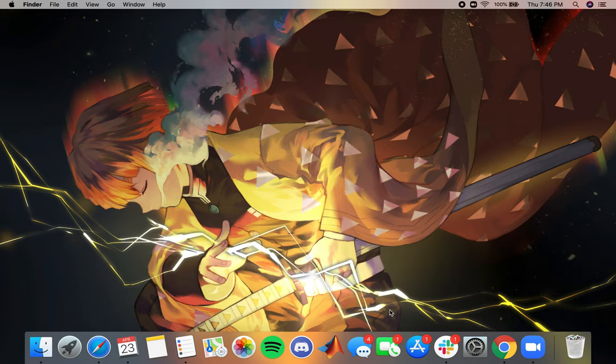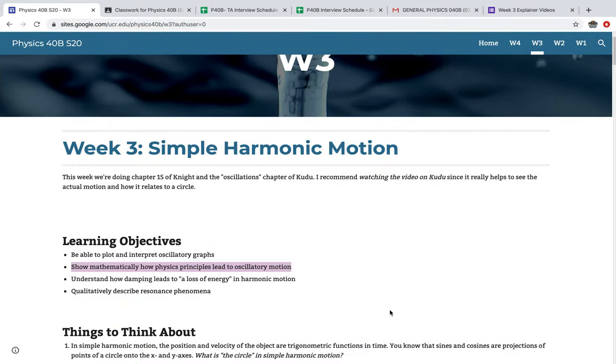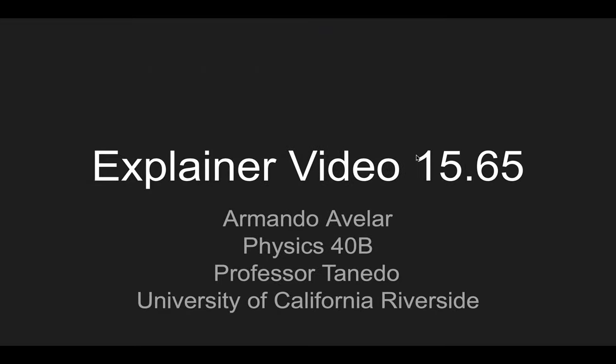Alright, welcome back Physics 40B for Dr. Tenedo's class. My name is Armando Avalor and we're gonna be doing another physics explainer video. This is number 15.65, and the way this relates to this week's learning objectives is right here - we're gonna show mathematically how physics principles lead to oscillatory motion. I feel like this is the one that fits mostly for this problem, so let's get right into it.